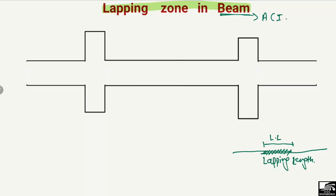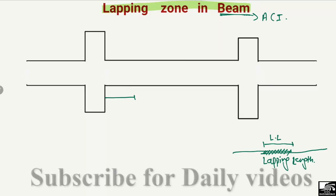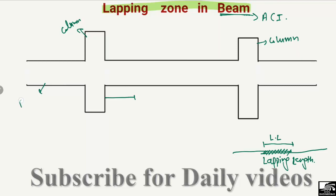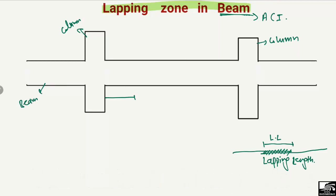According to the ACI standard, the lapping zone is defined as L/8 from the column. If this is a beam and column frame structure — with columns on either side and a continuous beam running through — ACI states that from the L/8 distance from the fixed columns, you can provide the overlapping of the steel bars.